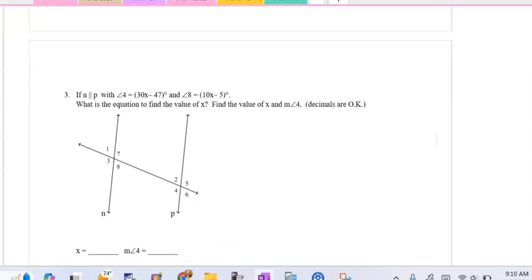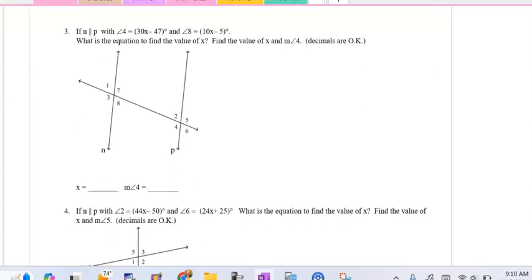Looking at our next class example, again, the first thing we're going to do is mark the angles. So angle 4 is 30x, take away 47, and angle 8 is 10x, take away 5. Now these are same side interior angles, and we learned that same side interior angles are also supplementary. So I'm going to add those two angles up, and they're going to equal 180 degrees.